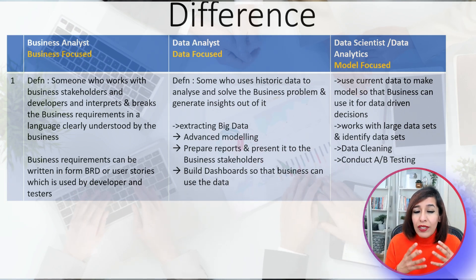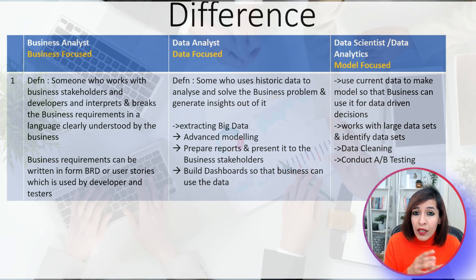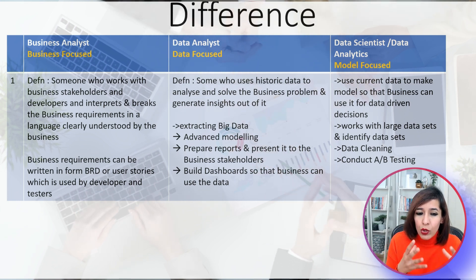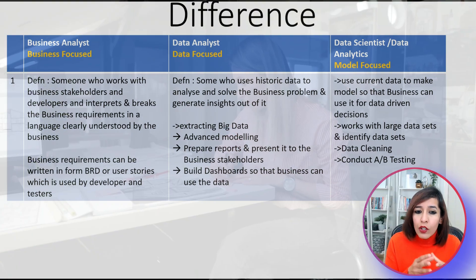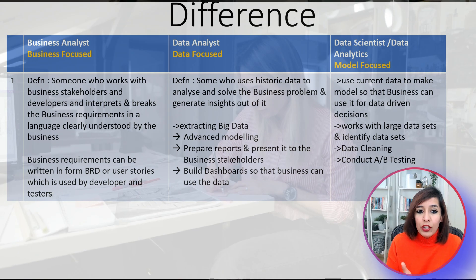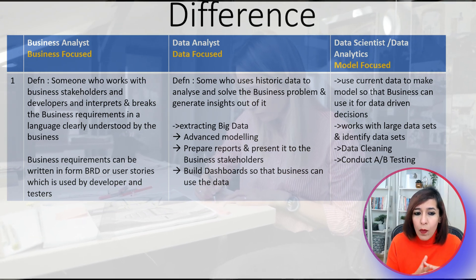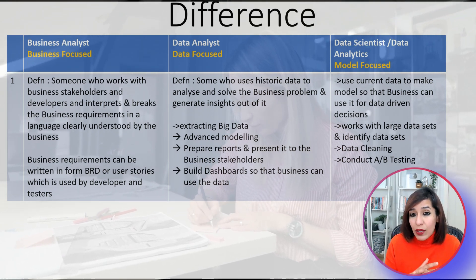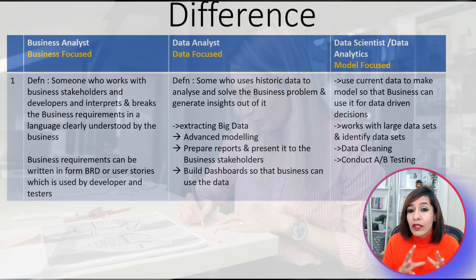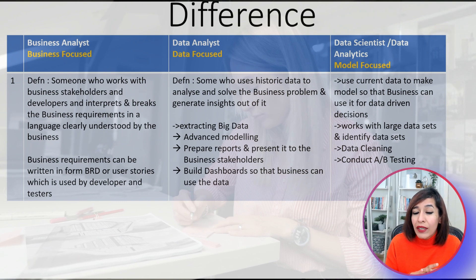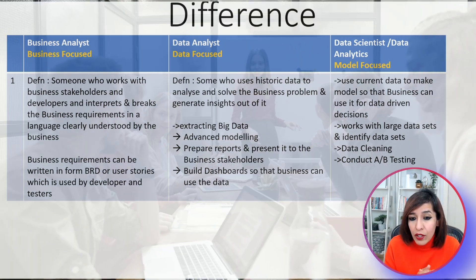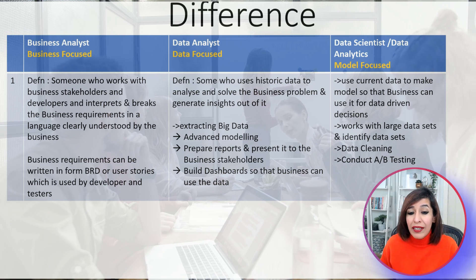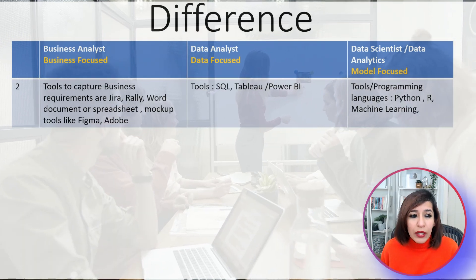Next is data analyst, which is data-focused. They use historic data — like in the example, analyzing last year's data to find what went wrong and where. You'll be analyzing historic data to find problems and generate insights by extracting big data, advanced modeling, or preparing reports and dashboards for business stakeholders. Moving to data scientists — this is model-focused. They use current data to build models for data-driven decisions, work with large datasets, are involved in data cleaning, and conduct a lot of A/B testing.